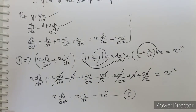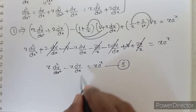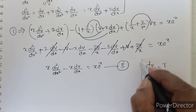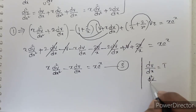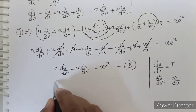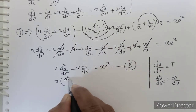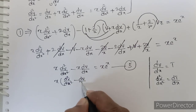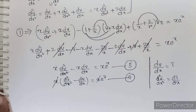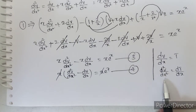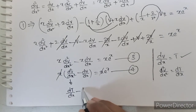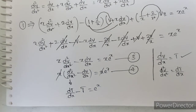We convert equation 3 into a linear differential equation by letting t = dv/dx, so d²v/dx² = dt/dx. Dividing equation 3 through by x, we get: dt/dx − t = e^x. This is a linear differential equation of type 1.